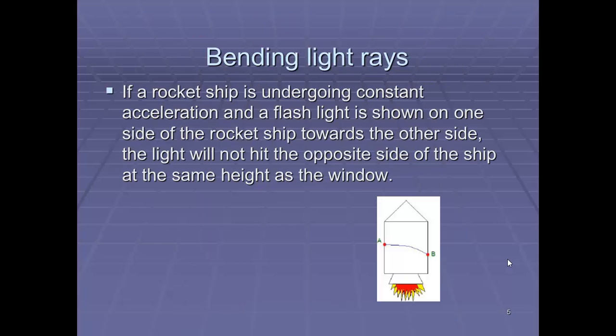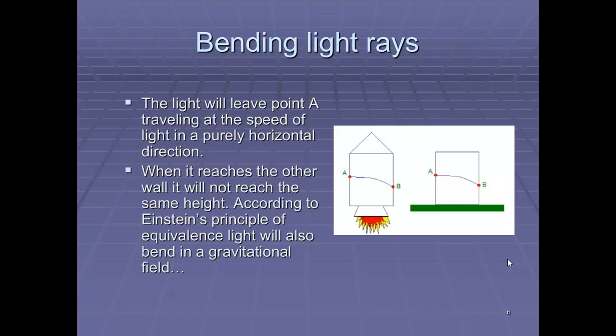He thought about light. If a rocket is undergoing constant acceleration and a flash of light is shown on one side of the rocket ship towards the other side, the light will hit the opposite side of the ship at the same height as the window. That means that it would appear that the light is bending. It would appear as if the light was bending because it wouldn't hit the completely opposite side. Now, what we've got here is if the light leaves point A, traveling at the speed of light in a purely horizontal direction, when it reaches the other wall, if it's not the same height, then we're not sure if what's happening is this due to gravity or is this due to acceleration.